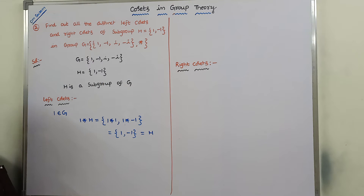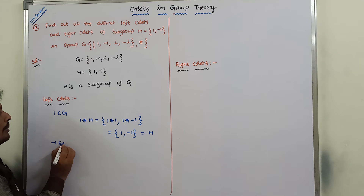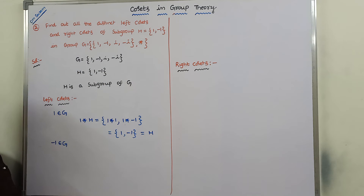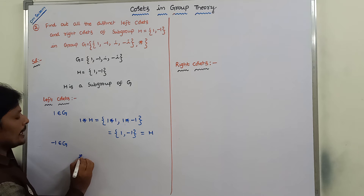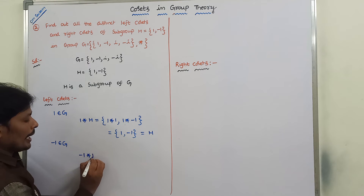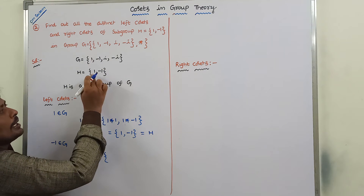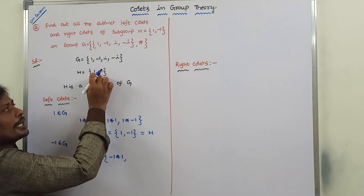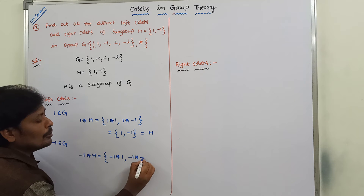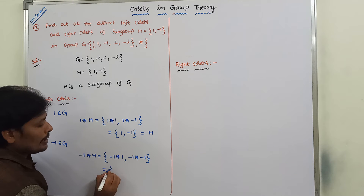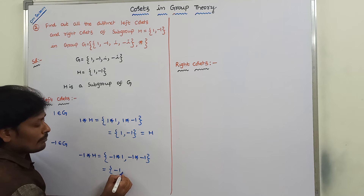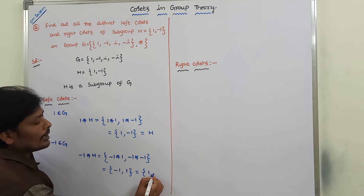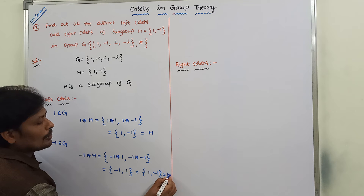Next, I am taking element −1. So −1 belongs to G, and −1 is combined with all the elements of H. Then we can form the coset as: −1 · H = {(−1)×1, (−1)×(−1)} = {−1, 1} = {1, −1} = H.